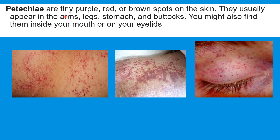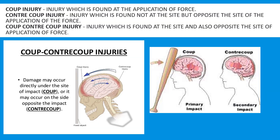Petechiae are tiny purple, red, or brown spots on the skin. They usually appear on the arms, legs, stomach, and buttocks. You may also find them inside your mouth or on the eyelids.